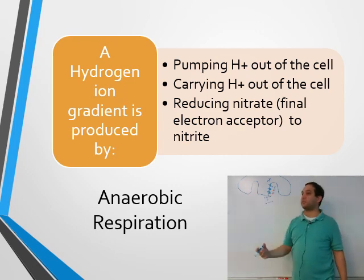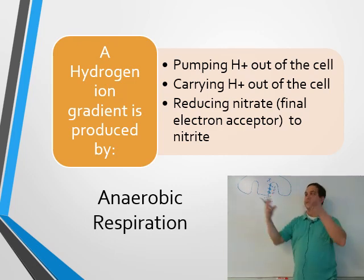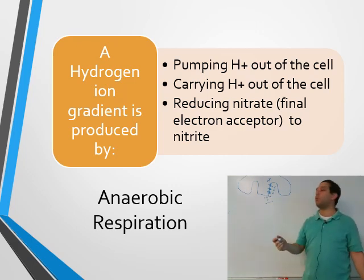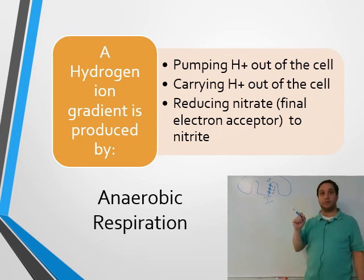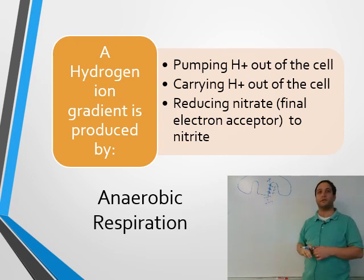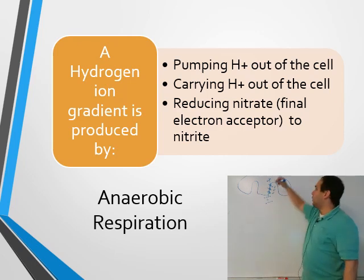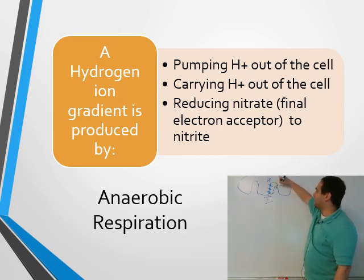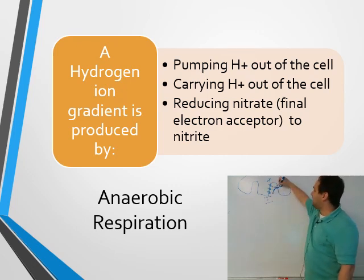Nitrate is present just like oxygen is present. Nitrate accepts the electron at the end, just like oxygen would - but instead of being turned into water, it's turned into nitrite. We've produced lots of hydrogen - an electrochemical gradient. The way these hydrogen ions get back inside is through ATP synthase, which converts ADP into ATP.